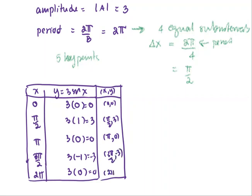And to plot the graph, the maximum is 3, minimum is negative 3. Locate the maximum, locate the minimum, and then the five key points: 0, π/2, π, 3π/2, and 2π.